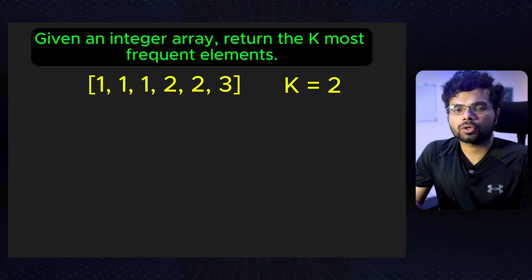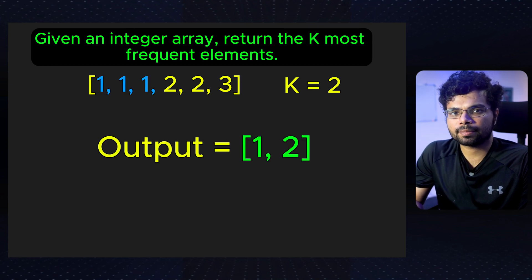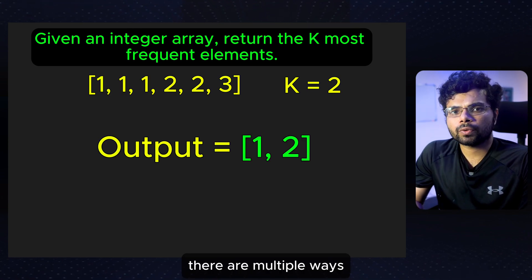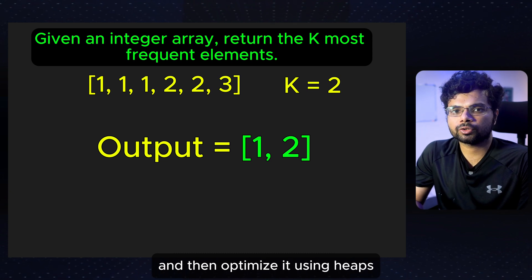Let's say we have an array and k is equal to 2. In this case, the answer would be 1 and 2 since 1 appears 3 times and 2 appears 2 times. There are multiple ways to solve this problem, but we will start with the most intuitive approach and then optimize it using heaps.